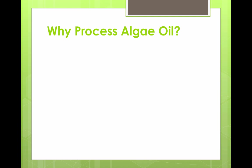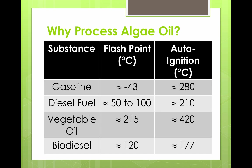Why do we need to process algae oil? In order to burn something in our diesel engine, we need that fuel to act like diesel fuel. Vegetable oil has a much higher flashpoint and a much higher auto-ignition temperature. Auto-ignition temperature is the temperature at which a substance will automatically combust without an ignition source. Biodiesel has a much closer flashpoint and auto-ignition temperature to diesel fuel, so we've got to do something to this vegetable oil because it really won't burn in our diesel engine as-is.